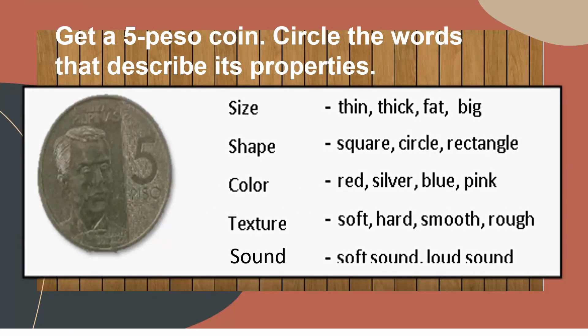Okay, class. Now, I want you to get a 5 peso coin. Observe the size, shape, color, texture, and sound. Circle the words that describes its properties.